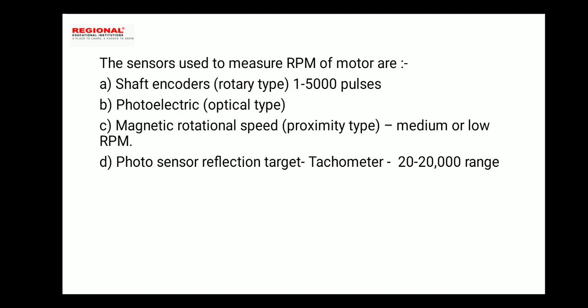Sensors are used to measure the RPM of a motor. A rotary type shaft encoder is used to measure up to 1500 pulses. Photosensors are used for the optical type — the optical light of the shaft measures speed. Magnetic rotational speed sensors are used for proximity type at medium or low RPM. A photo sensor reflection target tachometer can measure up to 20,000 pulses.